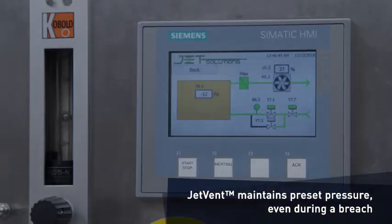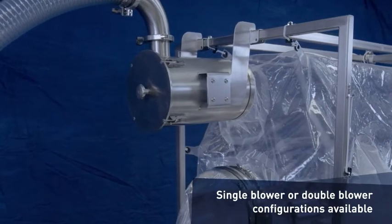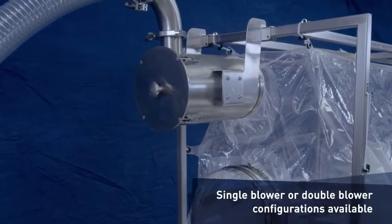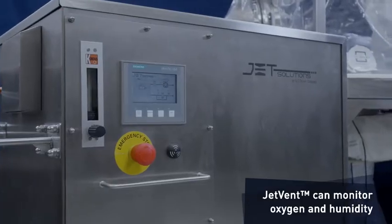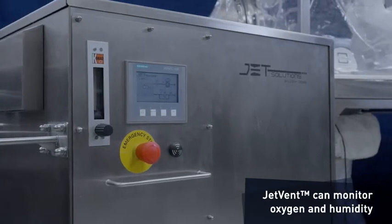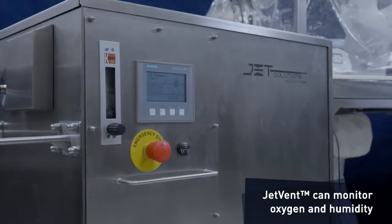Even during a breach condition, the JetVent responds automatically and maintains a negative static pressure. The JetVent can be configured with a single blower when a pressure gas is available or a double blower when it is not. JetVent can also monitor and modify oxygen and relative humidity when provided with suitable supply gas and configured with set points and alarms.